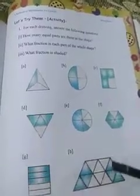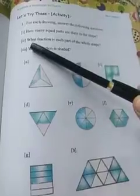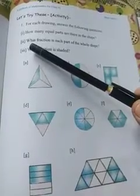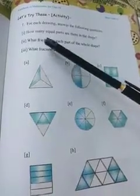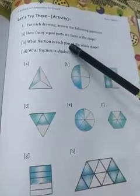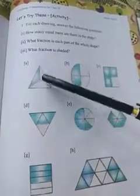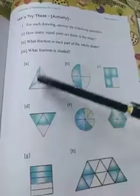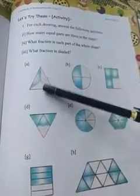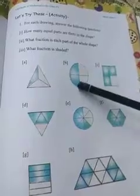Next question: What fraction is each part of the whole shape? For shape a with three equal parts, each part is one by three (1/3).